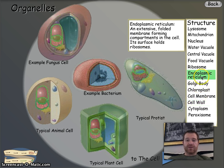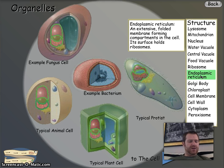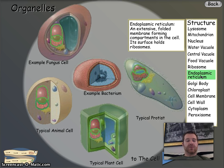Next one is the endoplasmic reticulum. It has a long definition — you don't need to know any of it. The only thing you need to know is it transports materials throughout the cell. And looking at the pictures, yes it's in plants and yes it's in animals.